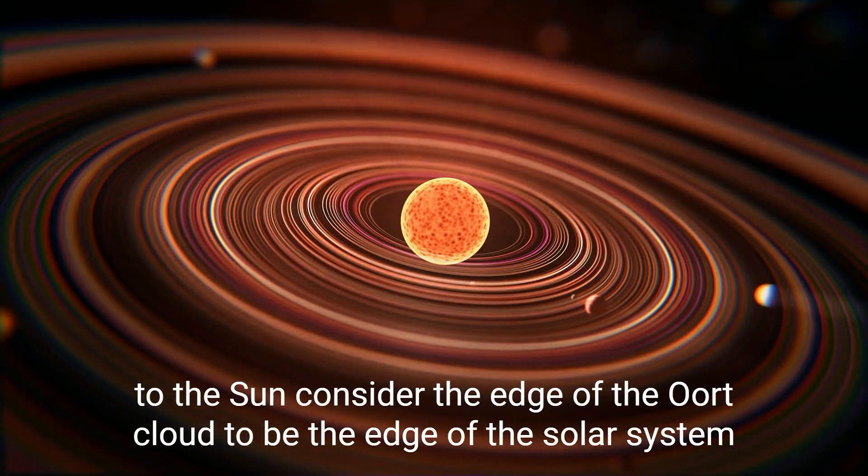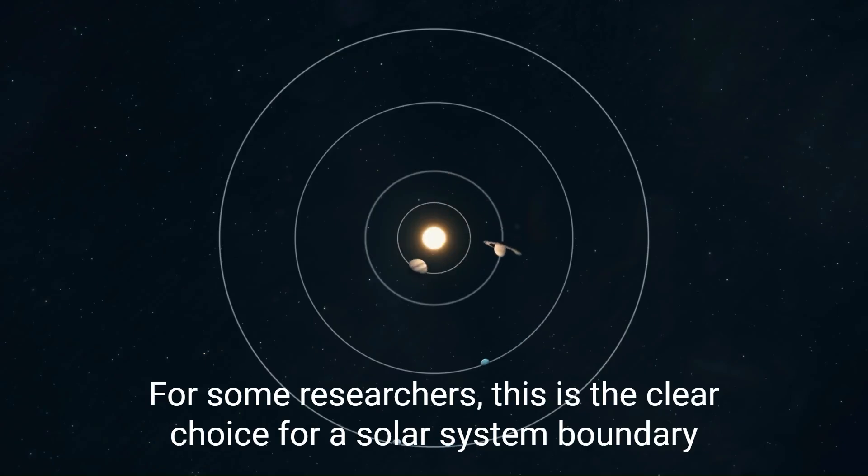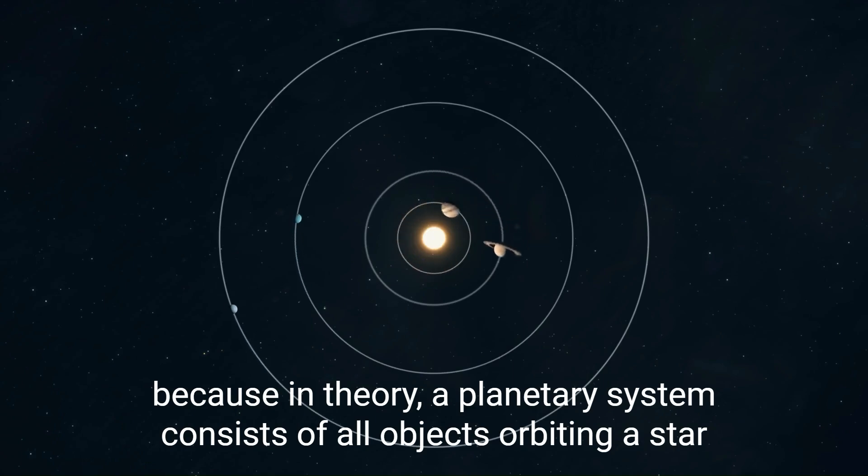For some researchers, this is the clear choice for a solar system boundary because in theory, a planetary system consists of all objects orbiting a star.